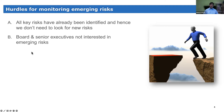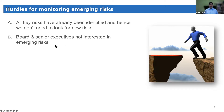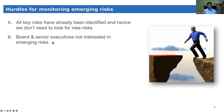In some organizations, the board and senior executives are not interested in emerging risk because some of these risks may only be relevant in three to five years' time. If the board is only focused on top risks for the next six to twelve months, they may not want to spend time on risks relevant years in the future. And organizations will not dedicate much effort to monitoring emerging risk if that is the attitude of board and senior executives.